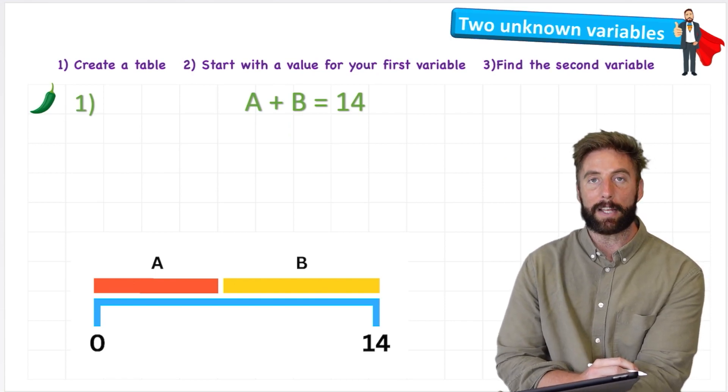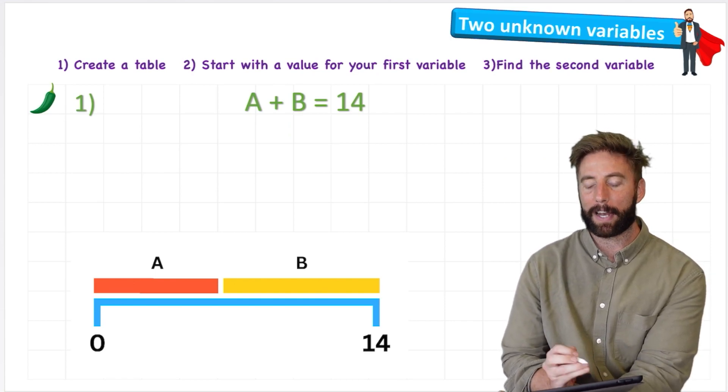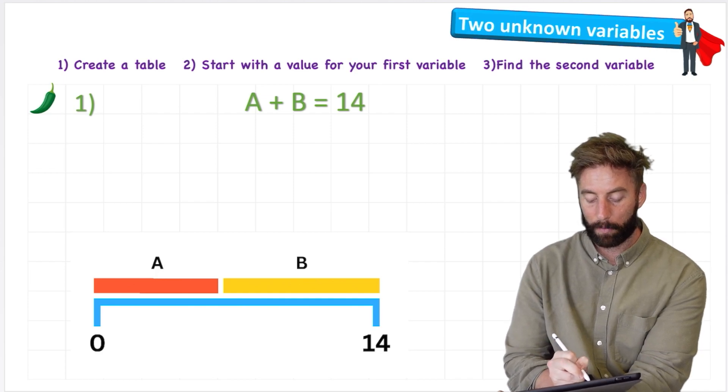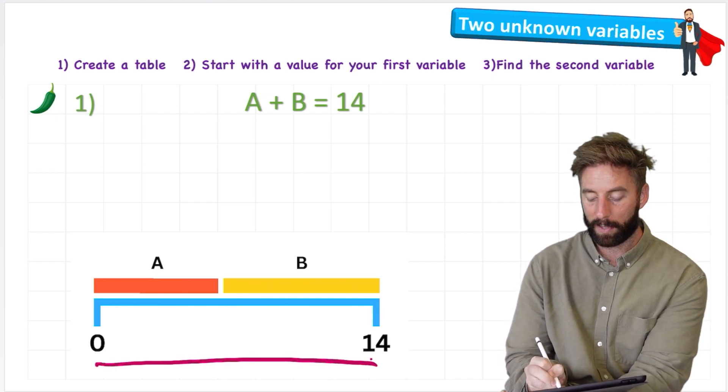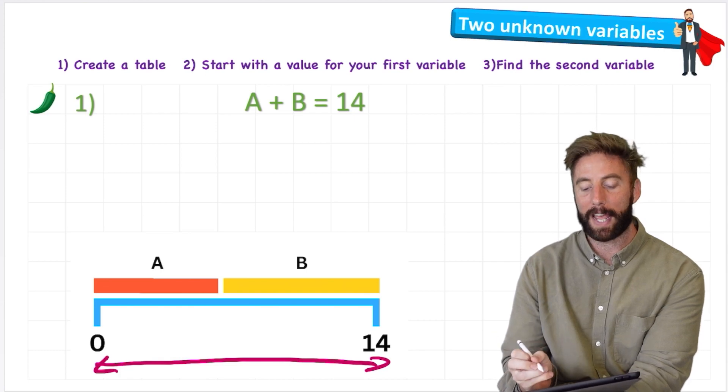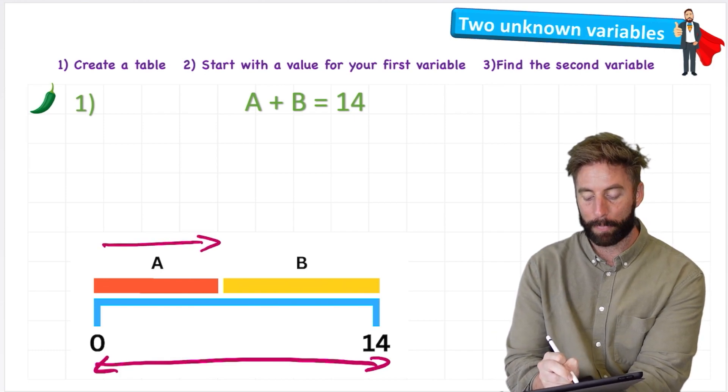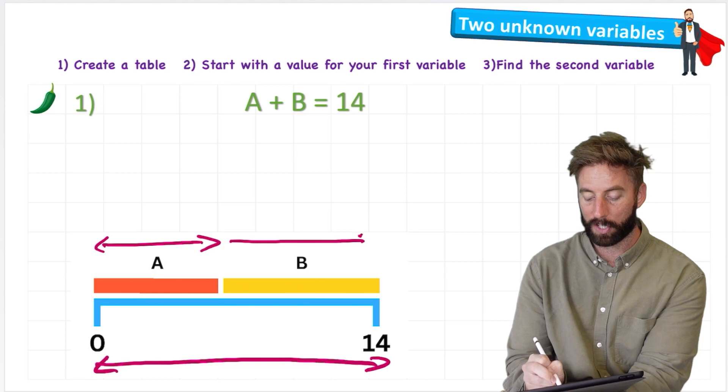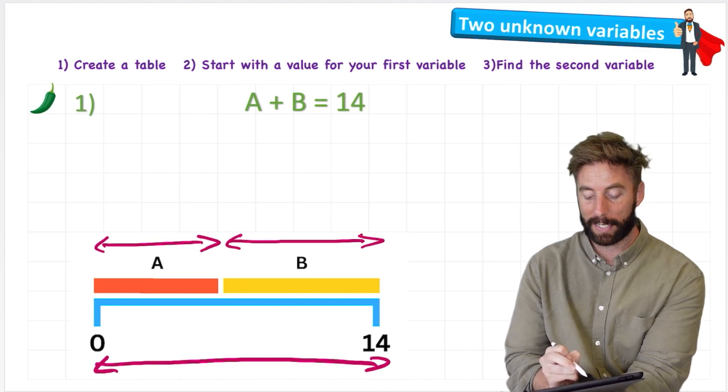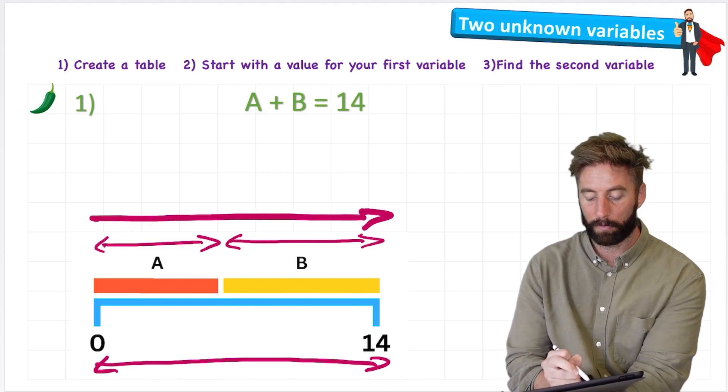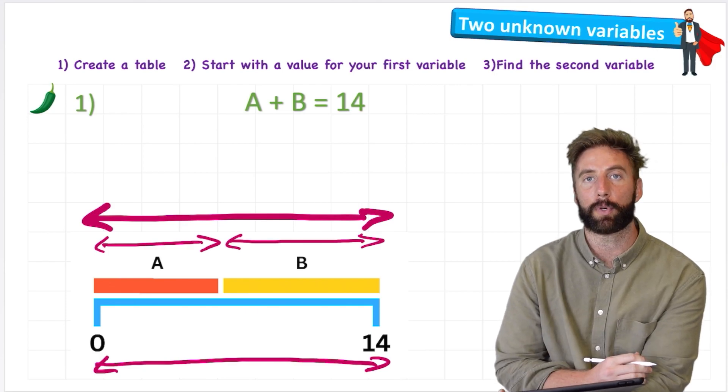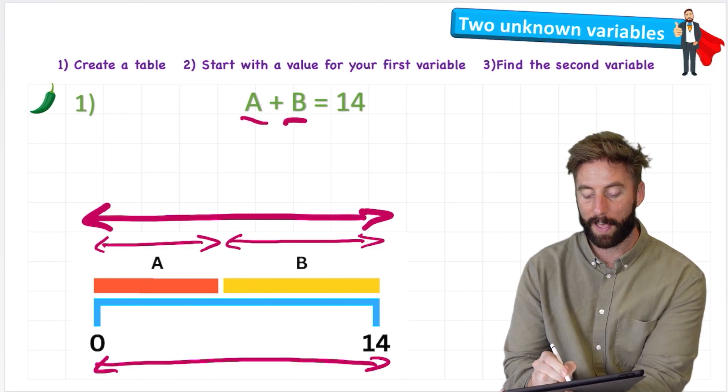So question one says A + B = 14, and we can sort of think about it like this diagram down here. If we have the total length of 14, then what we're saying is A measures a part of 14 and B measures the other part. But together they will equal 14.